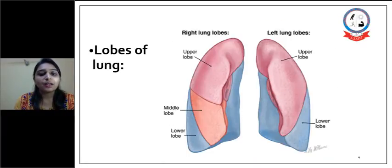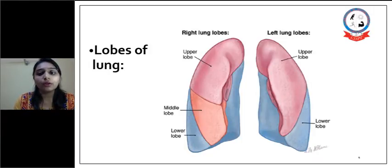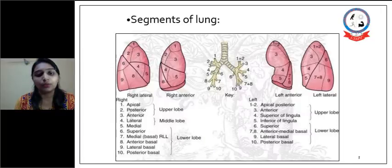Lobes of the lungs: on the right side there are three — namely the upper lobe, middle lobe, and lower lobe — and on the left side there is an upper and lower lobe.